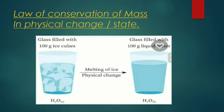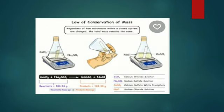This law also applies to physical changes. For example, if you take 100 grams of ice in a glass and melt it, the physical state changes. The water formed is also 100 grams. The state was solid and then it became liquid, but the mass was neither created nor destroyed — only the state changed.